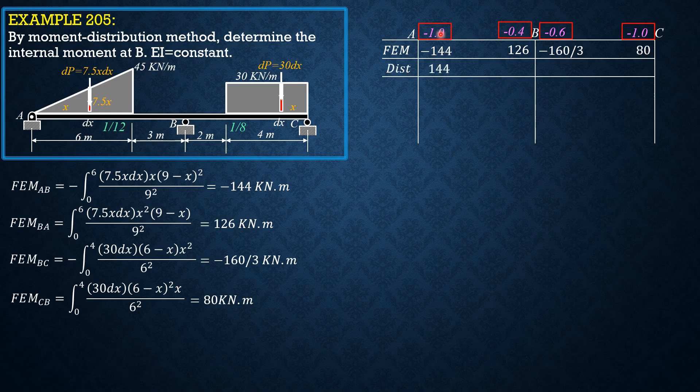So negative 144 times negative 1 is 144. Quantity 126 minus 160 over 3 times negative 0.4, put it here. Negative 29.067 at C.